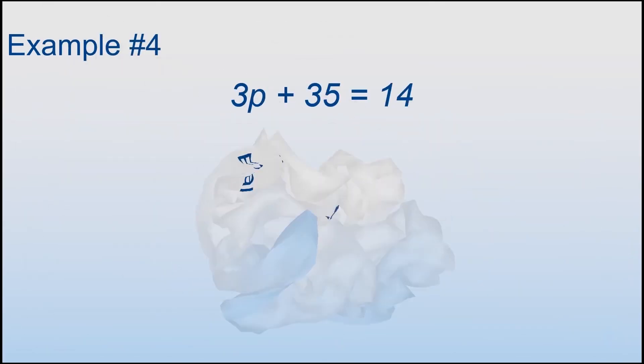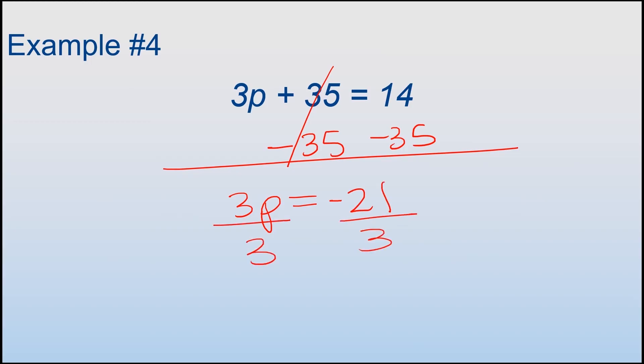Example number four: 3P + 35 = 14. Okay, I'm gonna start by subtracting 35 from both sides. Get rid of this. 3P equals 14 minus 35, which equals -21. Now I'm gonna divide both sides by 3. P equals -7.